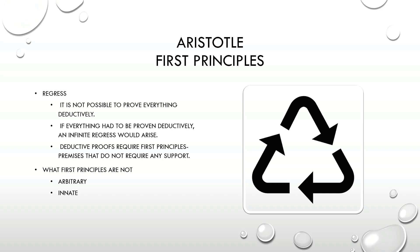The way Aristotle stops the regress is by saying there must be first principles — taking them as primitive, meaning they're not analyzed or explained. This is a standard regress argument: every theory has to have some things that are not explained, otherwise you'd need an infinite theory, which would be impossible. So we've got to have first principles. For the most part, those who aren't complete skeptics would generally have to accept there must be some first principles we accept without support.